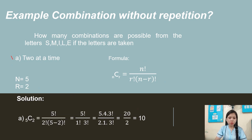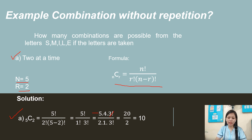Two at a time: the value for n is 5 and r is 2. C(5, 2) = 5 factorial over 2 factorial times 3 factorial. Expanding: 5 times 4 times 3 factorial over 2 times 1 times 3 factorial. We cancel out 3 factorial. 5 times 4 equals 20, 2 times 1 equals 2, and 20 divided by 2 equals 10.